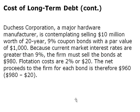For example, Fetcher's Corporation, a major hardware manufacturer, is thinking about selling $10 million worth of 20-year bonds with a 9% coupon and a par value of $1,000. Because current market interest rates are greater than 9%, the firm must sell the bond at a discount of $980, and the flotation costs are 2% or $20. The net proceeds will therefore only be $960 after the discount and flotation costs.